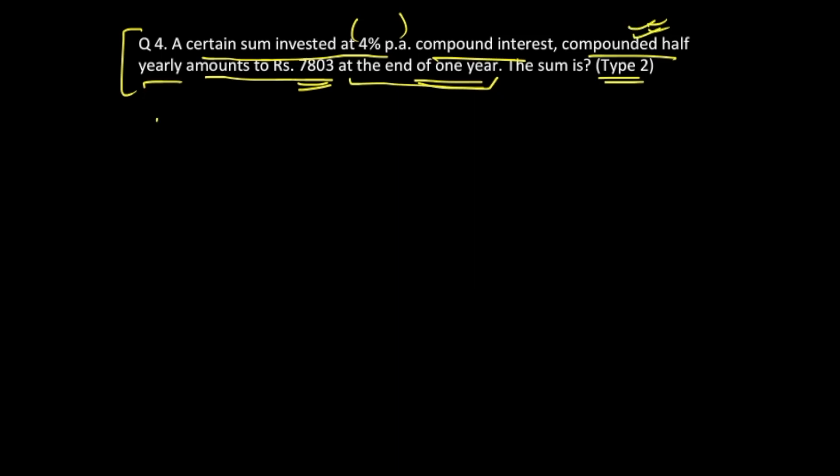So it is being compounded half-yearly. When I say half-yearly, you should remember that for half-yearly process we divide the rate by 2. So if rate is given, you divide it by 2 and you multiply the time into 2. So you are multiplying the time by 2 and you are dividing the rate by 2.